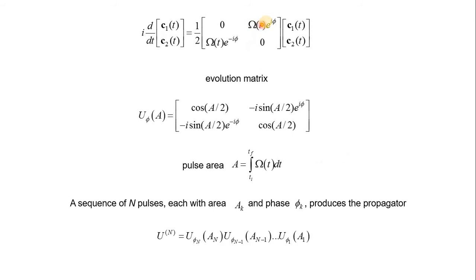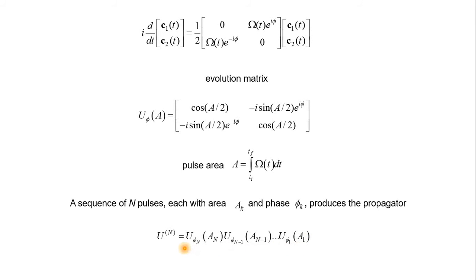Let's examine again the resonant case, but now let's give the Rabi frequency a phase. We assume the Rabi frequency is no longer real but a complex value, and we have good control of the phase. The evolution matrix is written with some extra terms. Now instead of one pulse, we can think of shining the laser, turning it off, shining the laser, turning it off — a sequence of N pulses, each with a different pulse area and different phase. The whole propagator after N pulses is just a product of each individual pulse propagator.